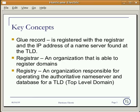Let's go over the key concepts. The IP address of a name server found at the TLD is known as a glue record. An organization that is able to register domains is known as a registrar — GoDaddy and Network Solutions are good examples. An organization that is responsible for operating the authoritative name server and database for a TLD is known as a registry.